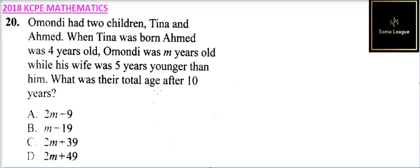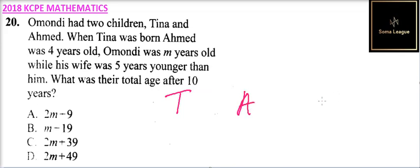What was the total age after ten years? So you can organize this information — let's have Tina, then we have Ahmed — those are the children — this is Omode, and this is the wife.